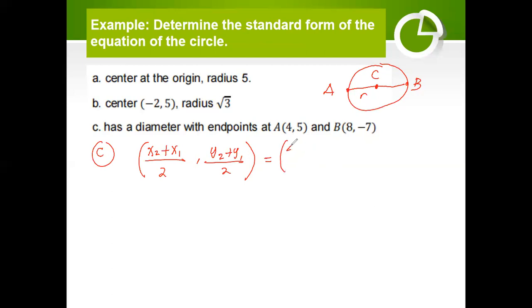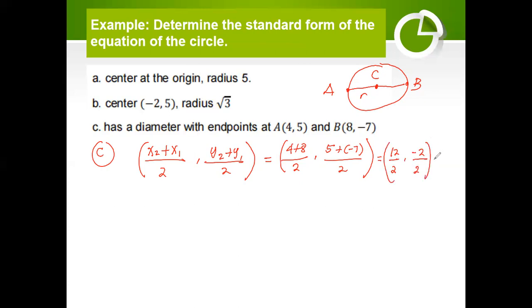Simplifying: 4 plus 8 gives 12 over 2, and 5 plus negative 7 gives negative 2 over 2. So we get 12/2 = 6 and negative 2/2 = negative 1. This is now our center with coordinates (6, negative 1).